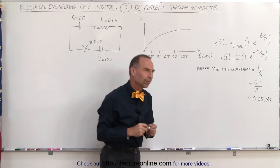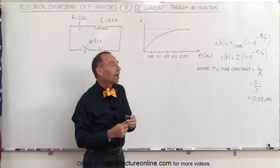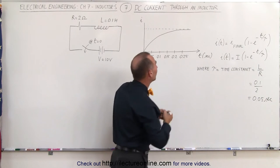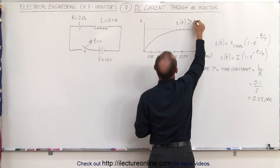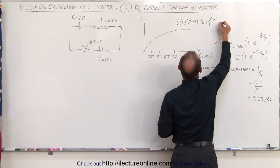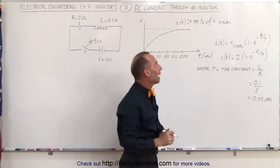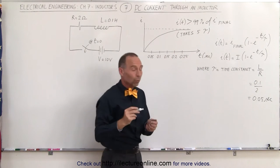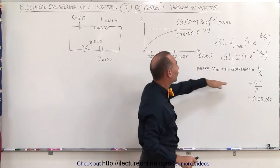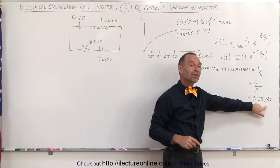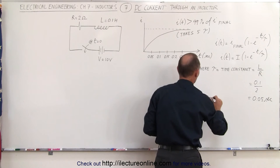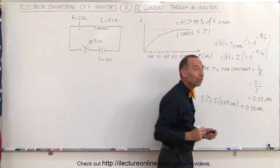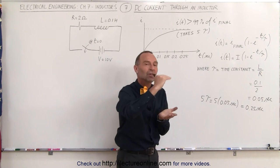Five one-hundredths of a second for a time constant. What does a time constant really mean? It turns out that typically, after five time constants, we have reached more than 99% of the final value. So when I as a function of time is greater than 99% of I final, five time constants have elapsed. In this particular case, with this circuit and these values for the resistance and the inductor, if the time constant is 0.05 seconds, then after five time constants — five tau equals five times 0.05 seconds, which equals 0.25 seconds, basically a quarter of a second — the current will have reached more than 99% of its final value.